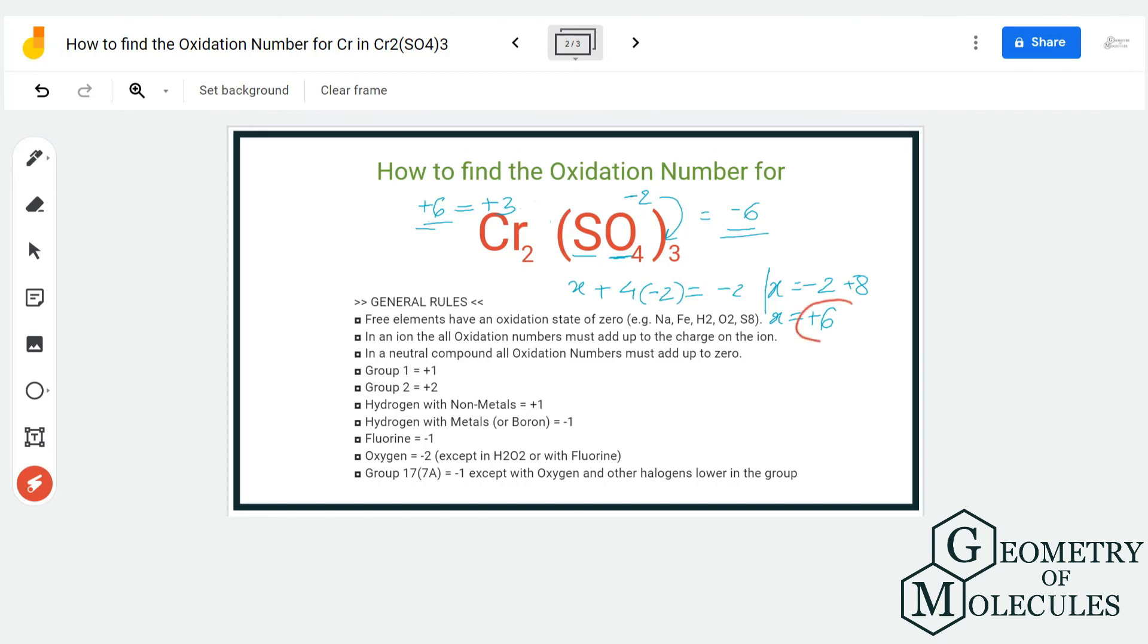And the sulfur here has a plus 6 oxidation number, chromium has a plus 3, and oxygen has a minus 2. Following these general rules, you can find out the oxidation number of different atoms and ions.